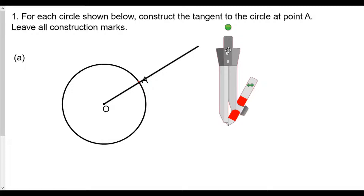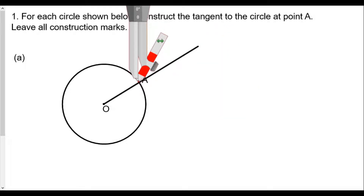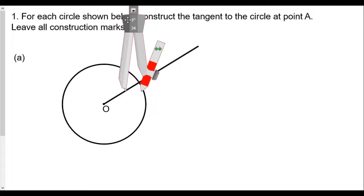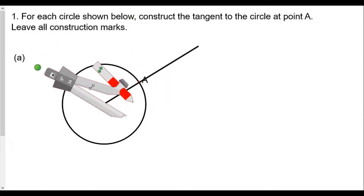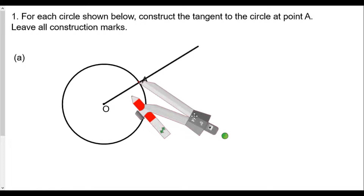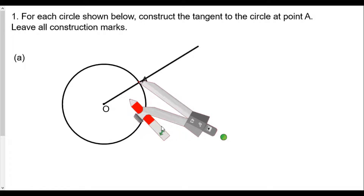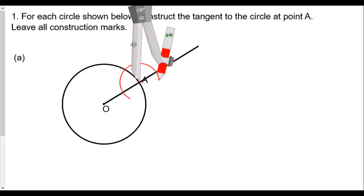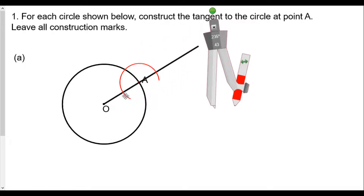We're going to draw a perpendicular segment passing through point A. The first thing you want to do is put the middle point of the compass on point A, open up a little bit, and draw a semicircle. We want to mark off two points on the line we just drew. I'm going to mark off this segment here, controlling the semicircle, and the important points we found are at these two points.